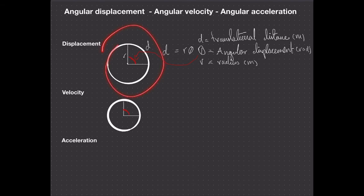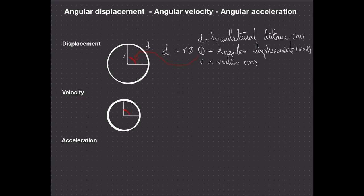Seeing as our displacement is measured in radians, our velocity will also have a unit measured in radians. We will use both our SI units — radians and seconds. Much like when we refer to velocity in kinematics as meters per second, for angular velocity we're going to use radians per second.